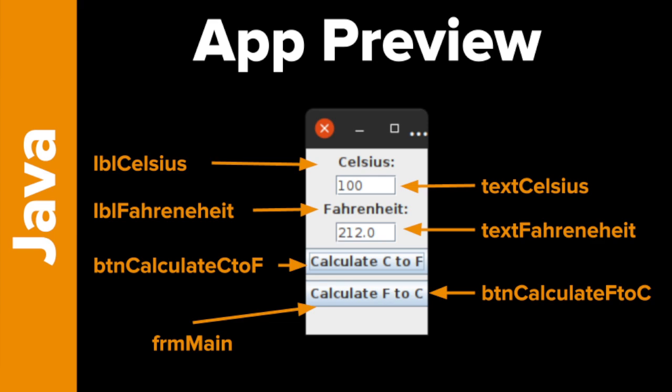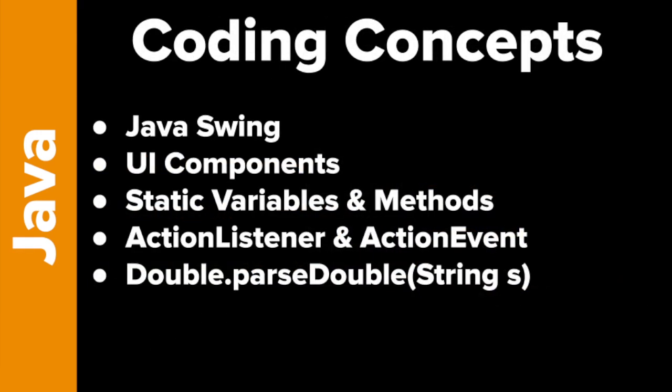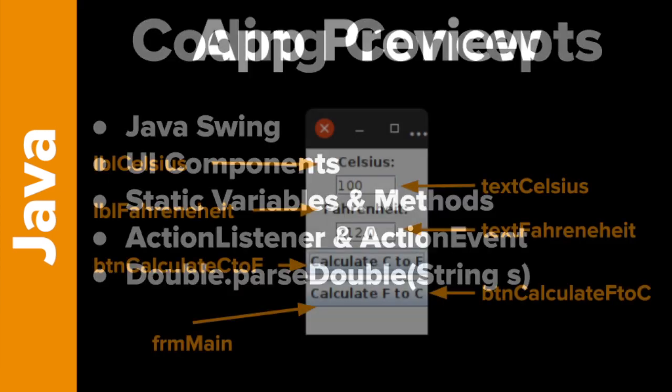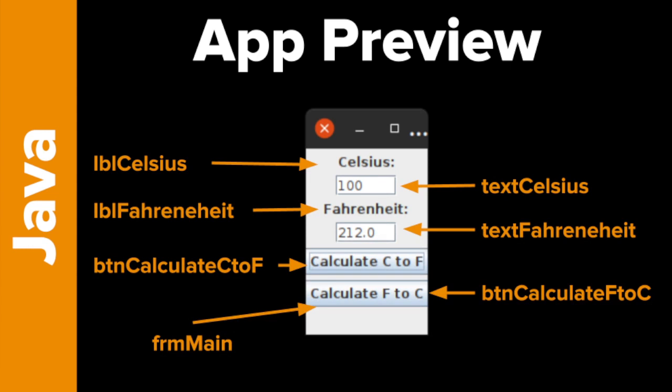Some of the coding concepts we're going to be looking at here include Java Swing, which lets us make GUIs in Java, the different UI components — buttons, labels, text fields, and frames. We're also going to be using static variables and methods, something called an action listener and action event, and the Double class's parseDouble method. I designed this tutorial for my AP Computer Science students who've been doing Java for a couple of months, so I'm trying to stick to things they already know.